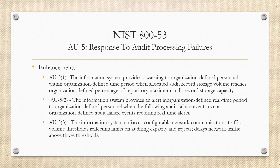Enhancement 3 is the information system enforcing configurable network communication traffic volume thresholds, reflecting limits on audit capacity, and rejecting or delaying network traffic above those thresholds. Organizations could have the capacity to reject or delay the processing of network communication traffic if auditing such traffic is determined to exceed the storage capacity of the information system audit function. This response is triggered by establishing organizational traffic volume thresholds. This isn't really required by a lot of organizations — it's more of a maturity model thing — but it is an enhancement to AU5.